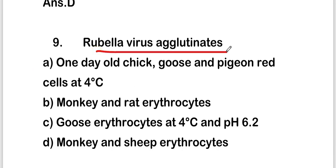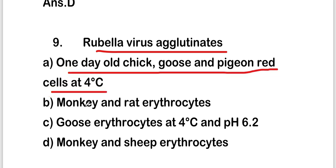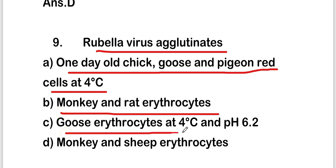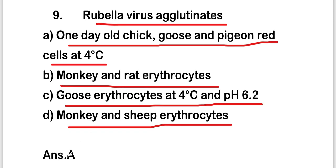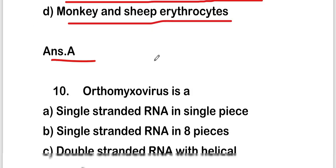The next question is: rubella virus agglutinates which of the following? Options are one-day-old chick, goose, and pigeon red cells at 4°C; monkey and rat erythrocytes; goose erythrocytes at 4°C and pH 6.2; or monkey and sheep erythrocytes. The right answer is option A — one-day-old chick, goose, and pigeon red cells at 4°C.